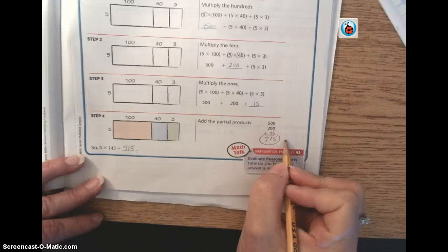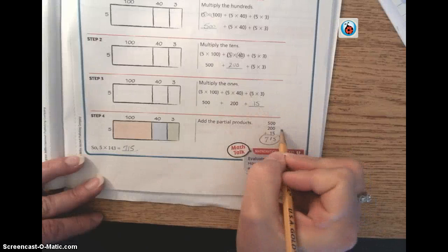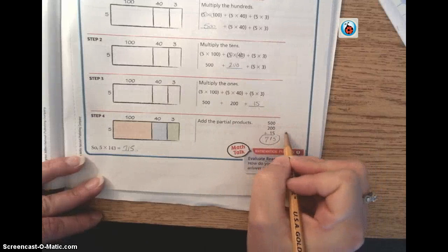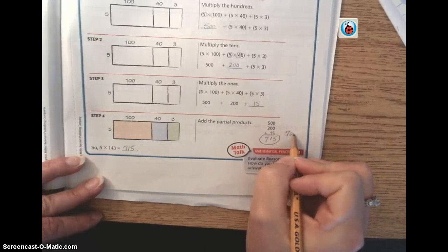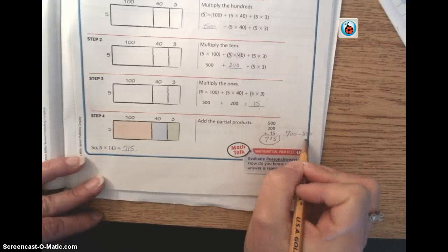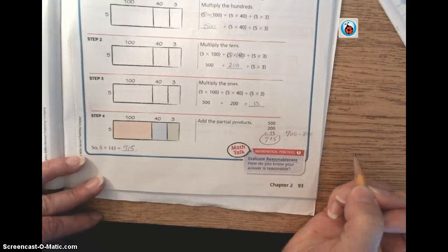What would be the closest thing that it would round to? And again, we're going back to, because you essentially rounded before you added, 715, we know that it's close to 700, and it would also be between 700 and 800 if we used our range chart.